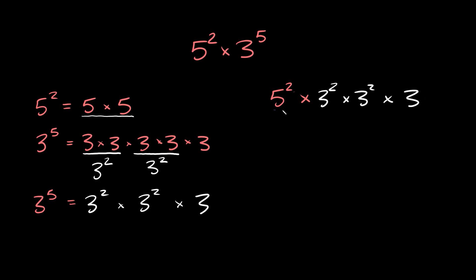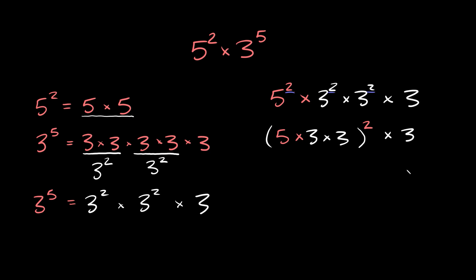As you can see, we have different bases here — we have a 5, a 3, and a 3. But since we have the same exponent on these numbers — a 2, a 2, and a 2 — what we can do now is multiply all our bases together. So we're going to multiply the bases: 5 times 3 times 3, and then they're all raised to the second power. And then we still have this times 3 out here.